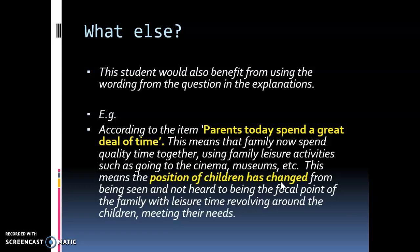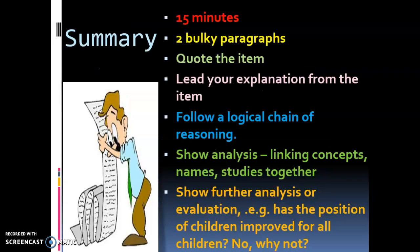In summary, you've got 15 minutes to write two equally balanced but detailed paragraphs. Make sure you quote the item and develop your explanation from the item following a logical chain of reasoning — where you say one thing, explain it in the next sentence, and further develop your answer. This will show a basic level of analysis by linking concepts, names, studies, and explanations together. You can then show further analysis or evaluation for solid AO3 marks — for example, has the position of children improved for all children? You might use CAGES to develop that, and you can show some evaluation or criticisms because there is an item available.